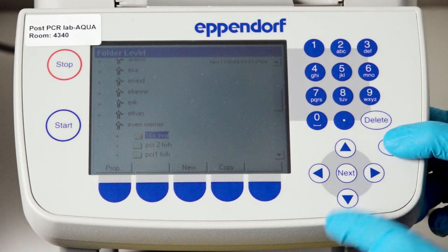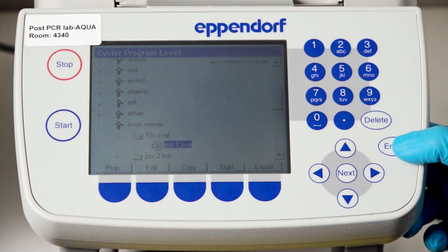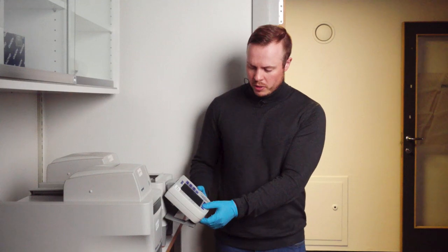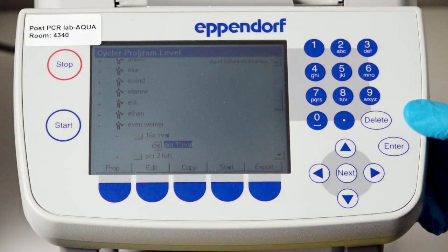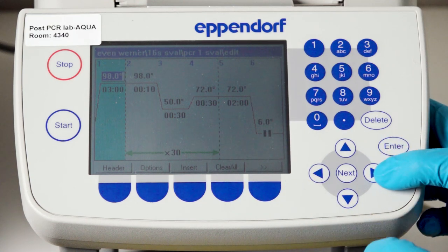I push one down, push enter again, and here we have the program. Sometimes you edit the program, change the amount of cycles, the temperatures and so on. So it's always very smart before you run it to push the button that says edit, and then you get up the program.